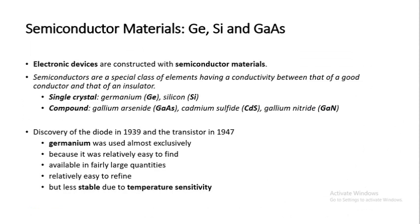Introduction to semiconductor materials. Electronic devices are constructed with semiconductor material. Semiconductor materials are a special class of elements having conductivity between that of a good conductor and that of an insulator. These semiconductor materials are found in different forms. They can be found as single crystals — examples are germanium and silicon — and we can also construct compounds of these semiconductor materials, such as gallium arsenide, cadmium sulphide, and gallium nitride.